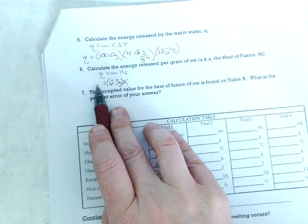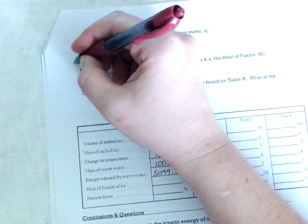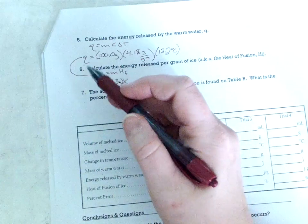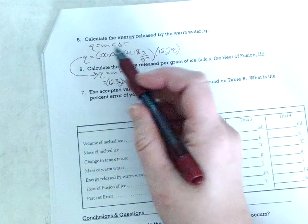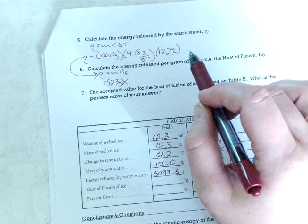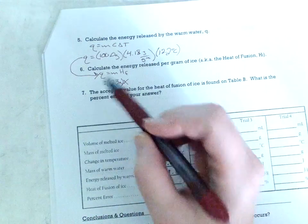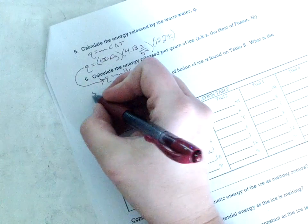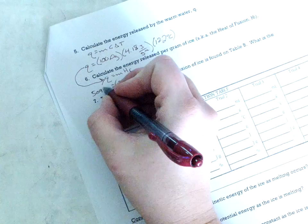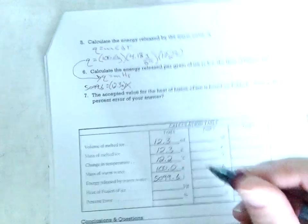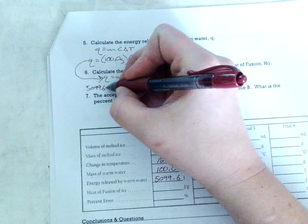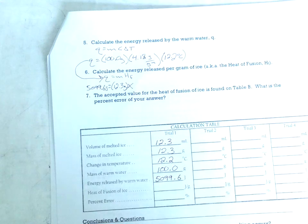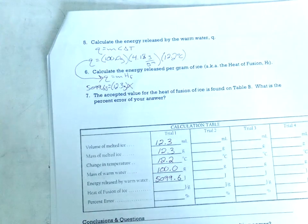Now how much heat did it take to melt this? This heat is this heat. The heat that left the warm water went into the ice to melt it. It's the same heat. That's why we did the whole MCAT equation up here. It's to find the heat and put it here and make that heat melt the ice. 5099.6 even though I know I really should be limited to 3 sig figs. This is in joules of course. So I'm going to do that guy divided by 12.3 and I'll find my heat of fusion.